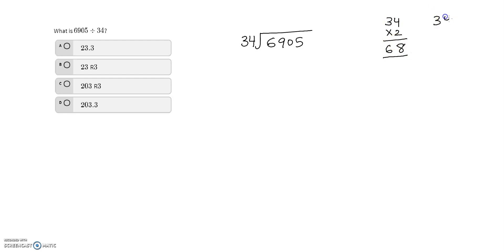Then 34 times 3: 3 times 4 is 12, so 2 goes here and 1 carries to the top. 3 times 3 is 9, plus 1 is 10. So 34 times 3 is 102.